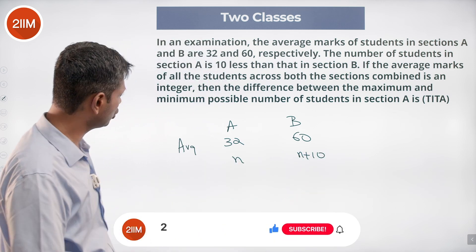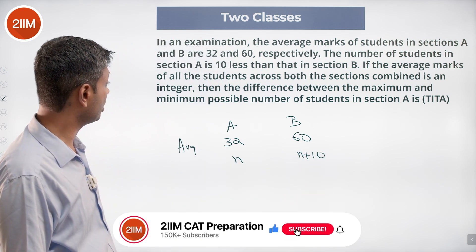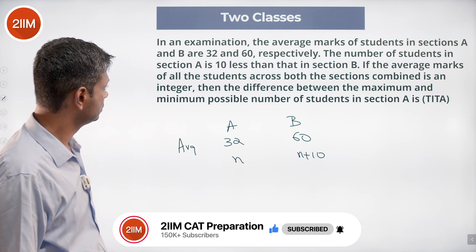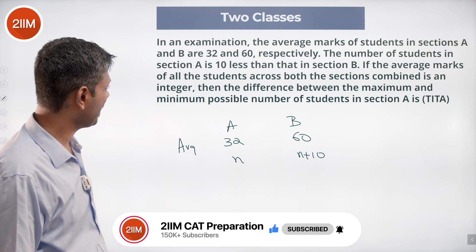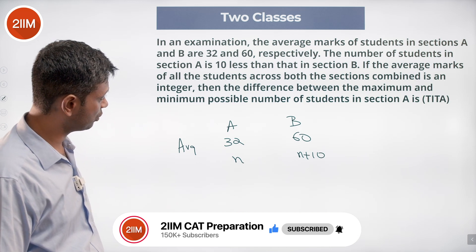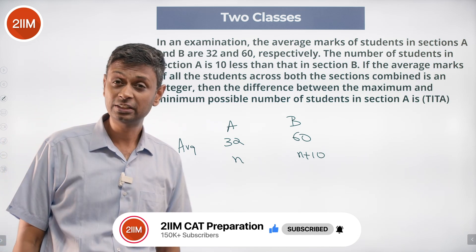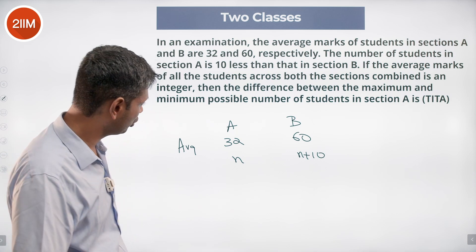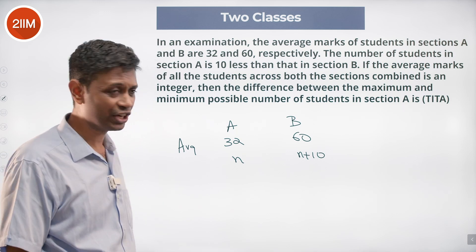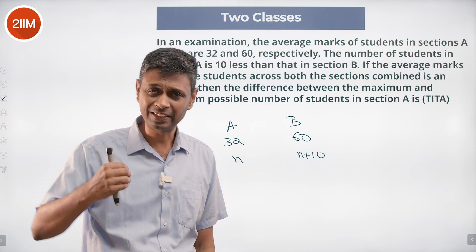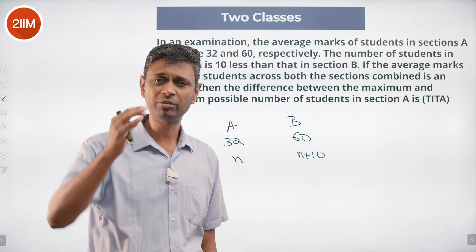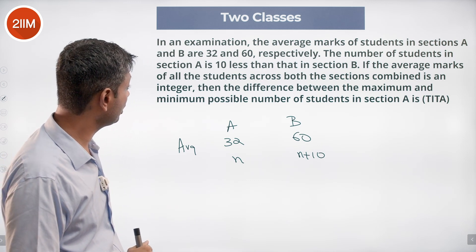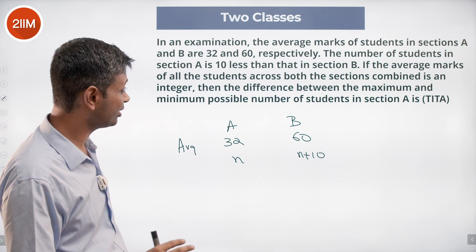The average marks of all the students across both the sections combined is an integer. The difference between the maximum and minimum possible number of students in section A is an integer. You have 32 and 60 and so I want to think about can the average in between be 33, can the average in between be 59? We want to find the maximum and difference between the maximum and minimum possible number of students in section A.